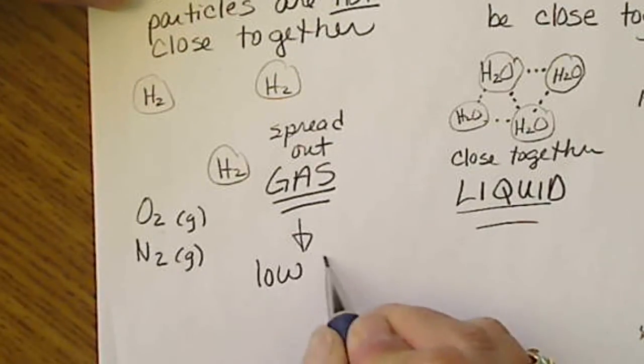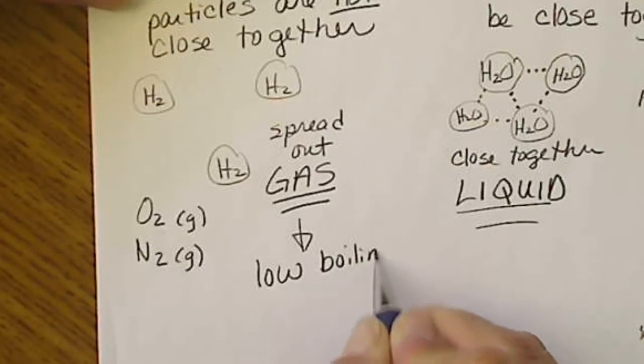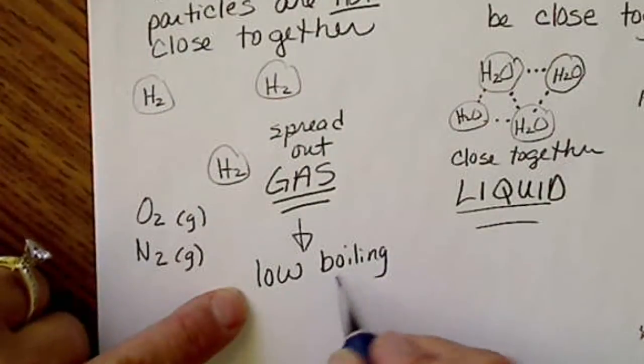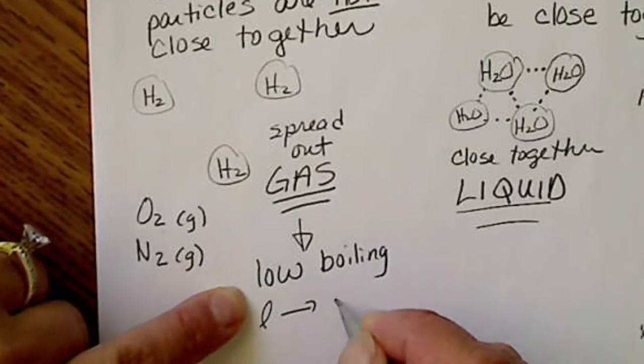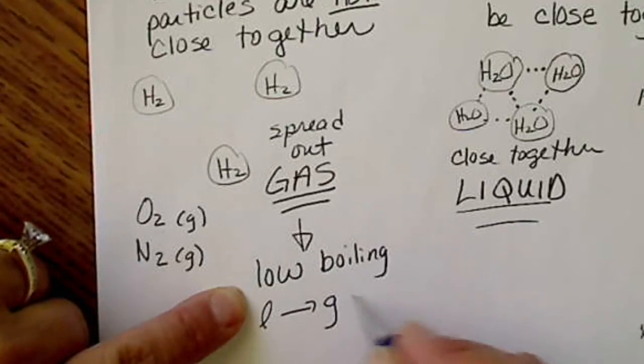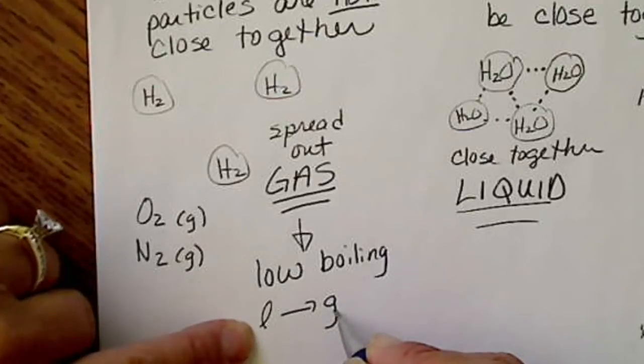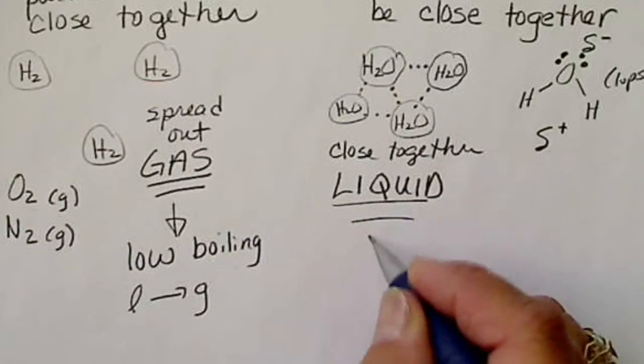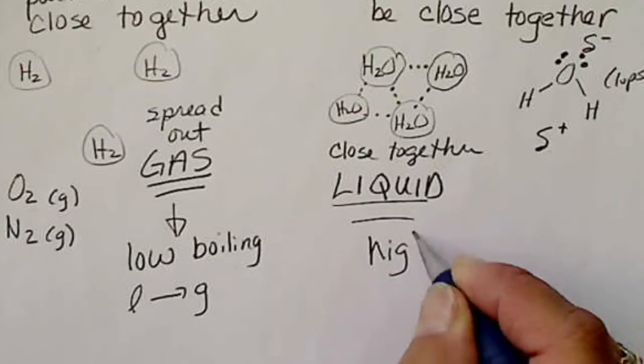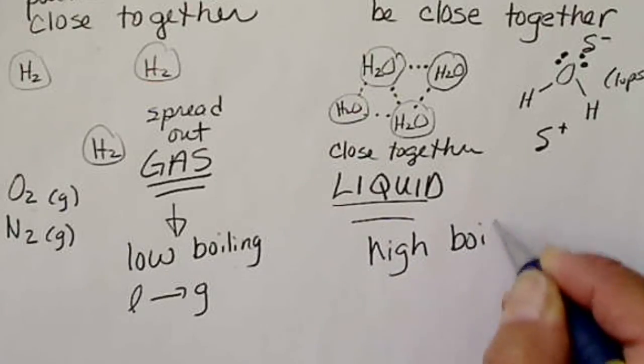have a low boiling point because the gas already boiled. Going from a liquid to a gas is what boiling means. If something's a liquid at room temperature, that means it has a high boiling point.